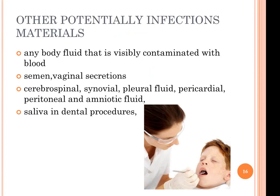Other potentially infectious materials include any bodily fluid visibly contaminated with blood, semen, vaginal secretions, cerebral spinal fluid, synovial fluid (in the joints), pleural fluid (in the lungs), pericardial fluid (around the heart), peritoneal fluid (in the abdomen), and amniotic fluid.